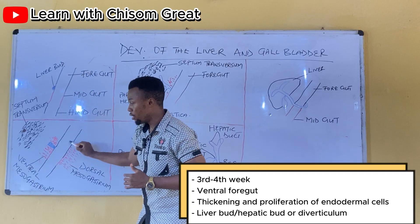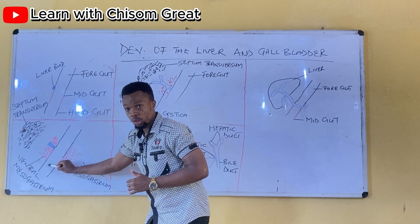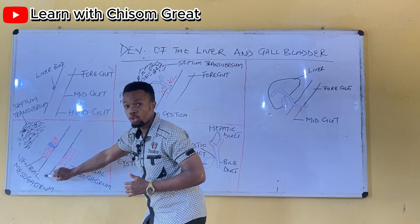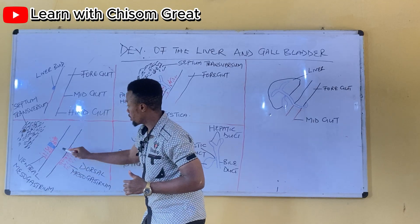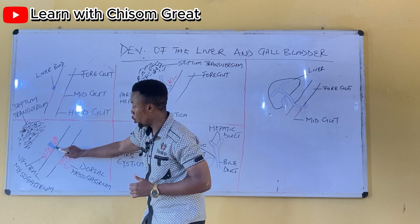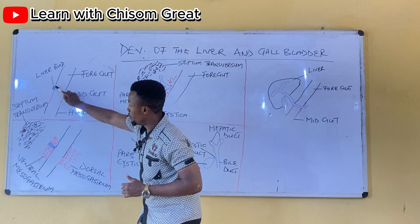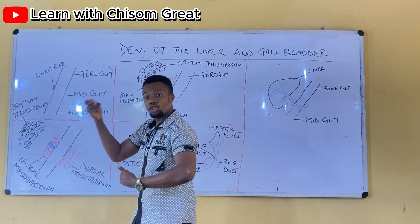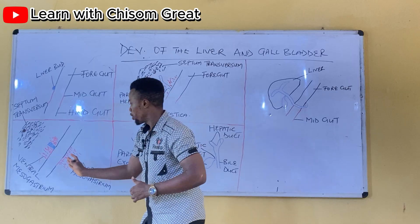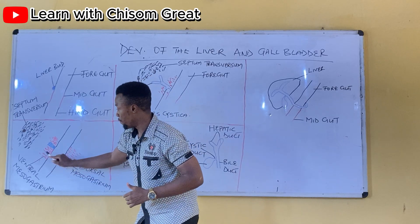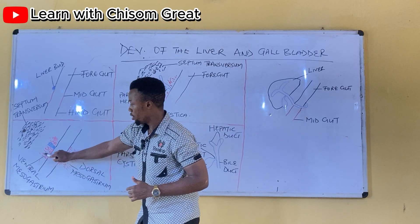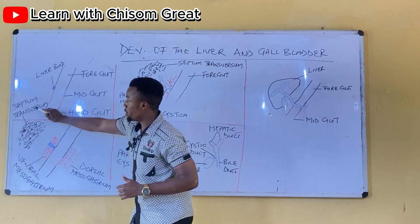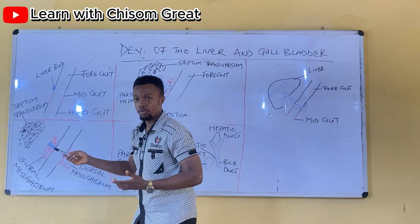This thickening happens in the ventral part of the foregut. Looking at the diagram, this is the foregut, the midgut, and the hindgut. You can see at the distal part of the foregut, this is where this thickening happened. This is the ventral mesogastrium, and this is the septum transversum.